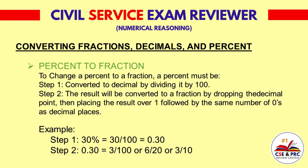Percent to fraction. To change a percent to a fraction, follow these steps. Step 1: convert to decimal by dividing it by 100. Step 2: the result will be converted to a fraction by dropping the decimal point, then placing the result over 1 followed by the same number of zeros as decimal places.